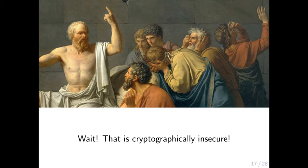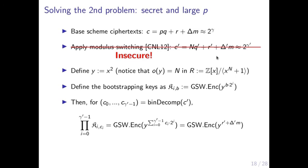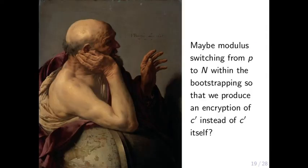However, this is not secure. The modulus switching is intended to switch the secret key p to another secret key, but we replaced p by the public value n. So given c' and n, one can simply decrypt c' to recover m.